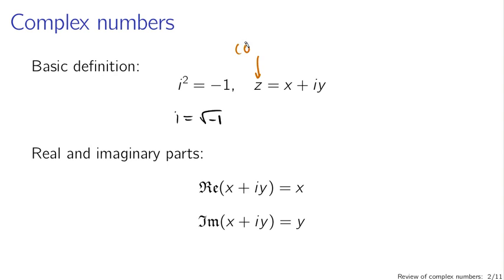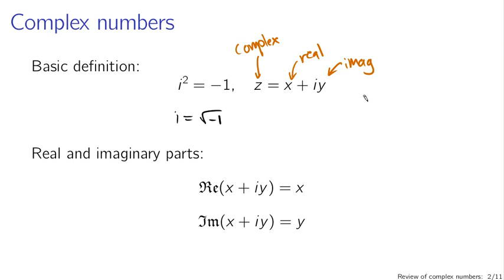In general, a complex number z can be written as the sum of a purely real part, x, and a purely imaginary part, i times y. Note: in this expression, z is complex, x and y are real, where i times y is purely imaginary. Something is purely real if y is zero; something is purely imaginary if x is zero.